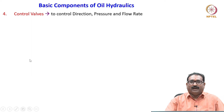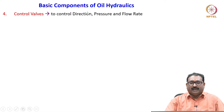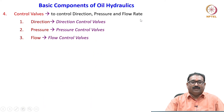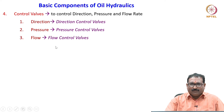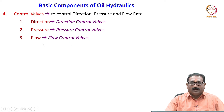Moving to the fourth component — control valves — these are very important in hydraulic systems. They control the direction of the actuator, limit the pressure level in hydraulic circuits, and control the flow rate to actuators. Based on these functions, control valves are available in three categories: direction control valves (to divert flow to the head side or tail side), pressure control valves (which control the pressure level), and flow control valves (which control the flow rate to the actuator).